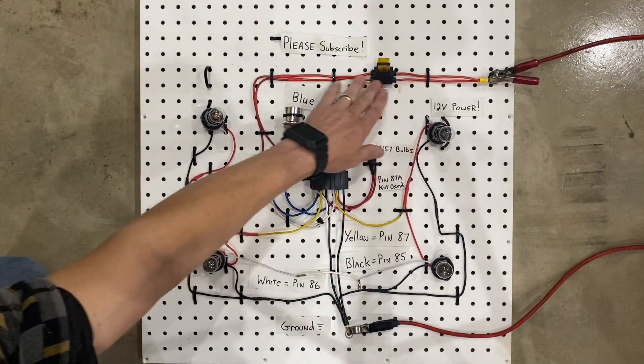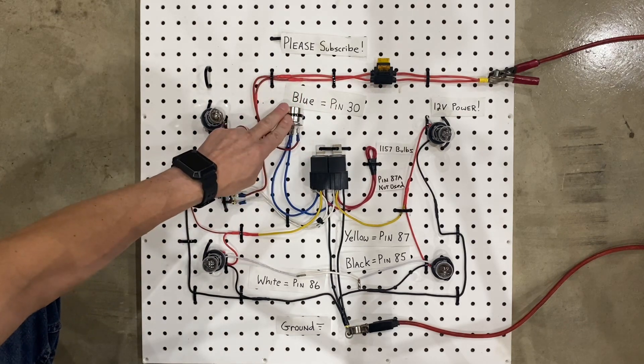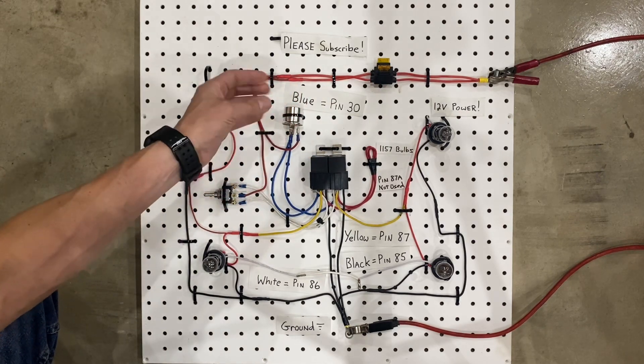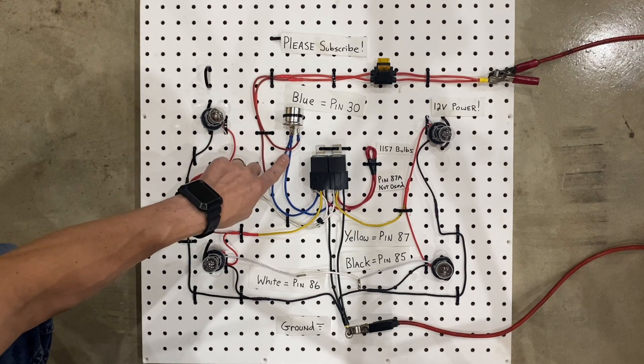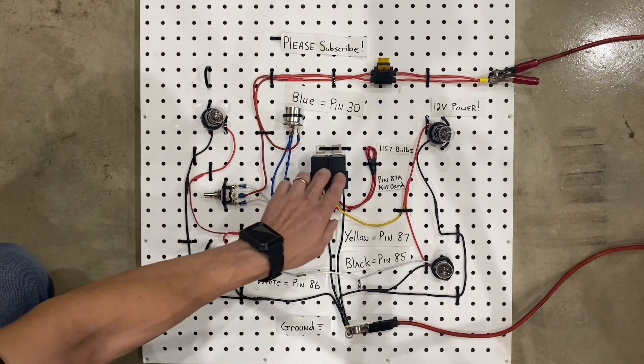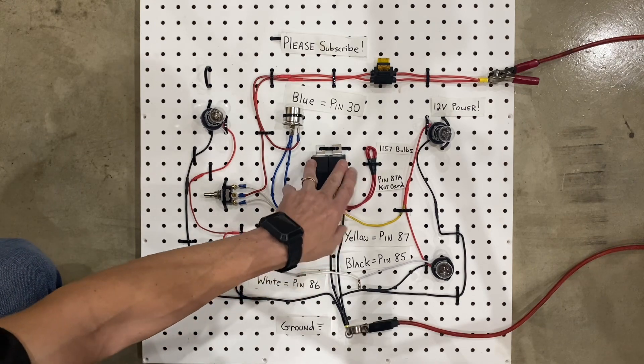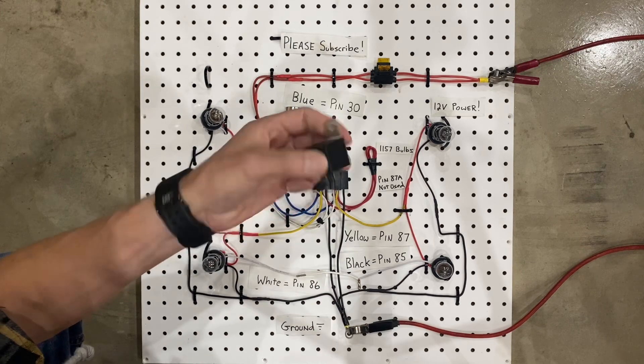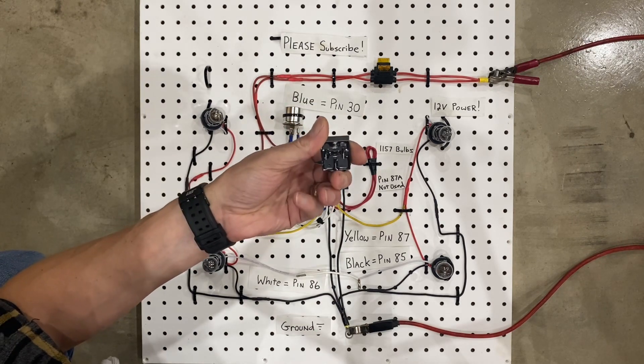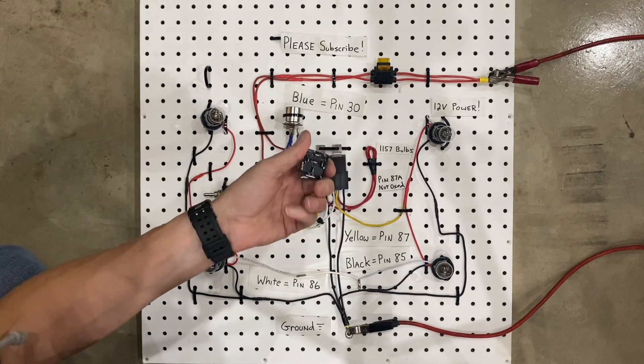The way that this works is you have power coming in to a flasher relay. This is what actually makes the lights flash. Then power comes out of the flasher relay on these two blue wires. And these blue wires go to pin 30 on each relay. These relays are actually numbered on the bottom, and each one has five different numbers because it's a five pin relay.